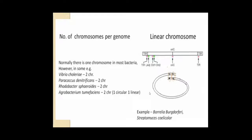Regarding the number of chromosomes per genome: most bacteria have a single chromosome. However, in some groups such as Vibrio cholerae, Paracoccus, Rhodobacter, and Agrobacterium, there are two chromosomes. In Agrobacterium, one chromosome is circular and one is linear.